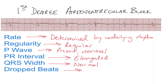There are no dropped beats with a first-degree AV block. If we look up here, we can see a P wave just before this dark line, and the QRS starts roughly five boxes later. So an elongated PR interval is one that is 0.2 seconds or more.